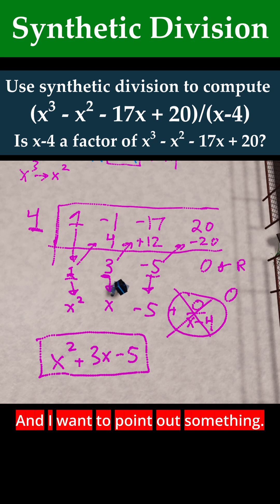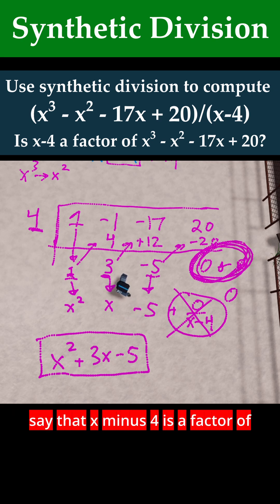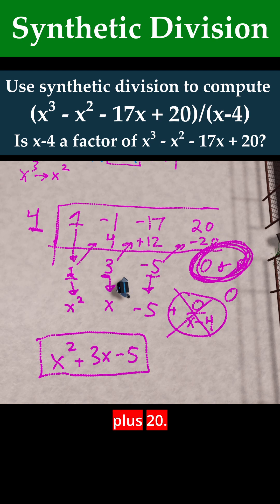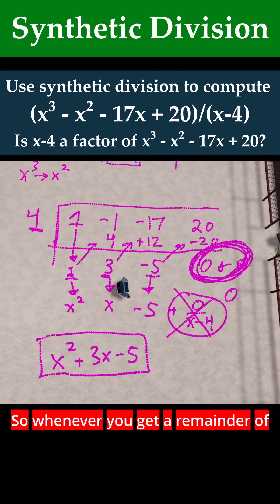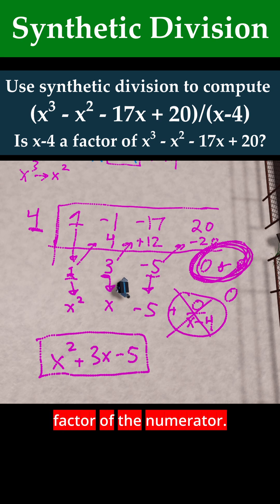Notice that our remainder is 0. Because the remainder is 0, we can say that x minus 4 is a factor of x cubed minus x squared minus 17x plus 20. So whenever you get a remainder of 0 in synthetic division, you can say that the divisor is a factor of the numerator.